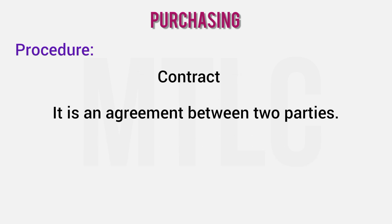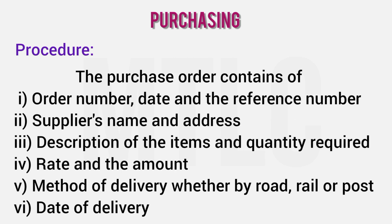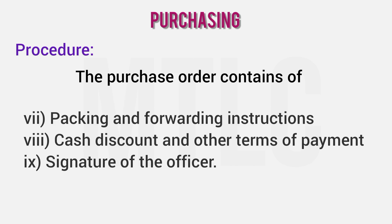Next is the Contract, also known as the Purchase Order. A purchase order contains an order number, date, and reference number; supplier's name and address; items and quantity; rate and amount; delivery instructions; date of delivery; packing and forwarding instructions; discount; terms of payment; and the signature of the officer.